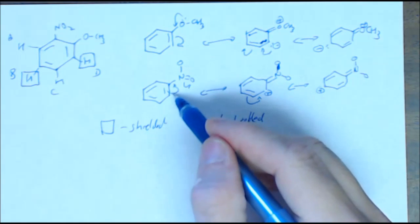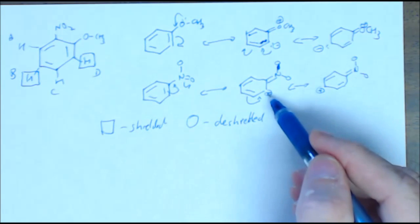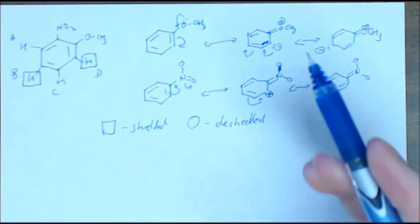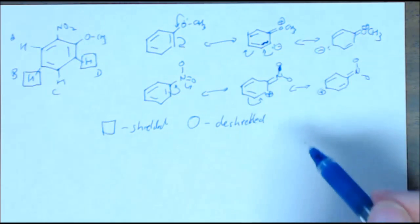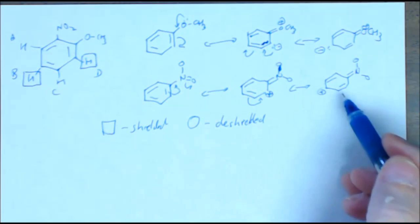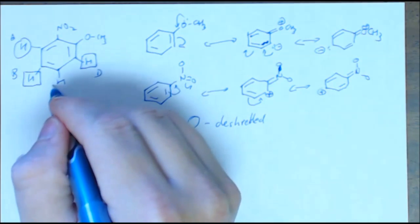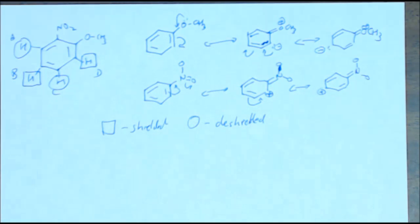For this one, in the ortho and para positions, I see positive charges, which means it's lost electron density and it's no longer shielded in the NMR. So because I've lost electron density here, what I expect to see is things in the ortho and para positions to be deshielded.